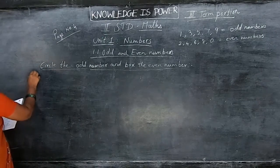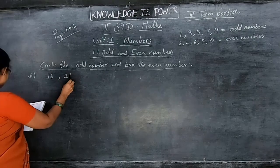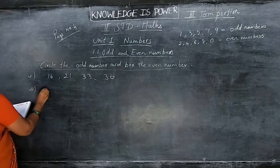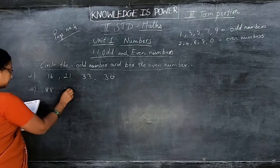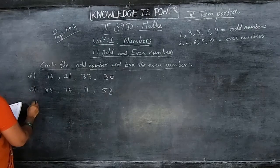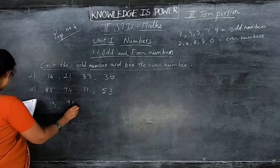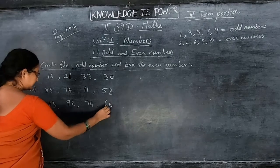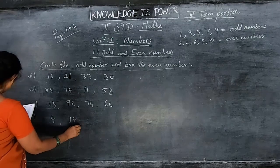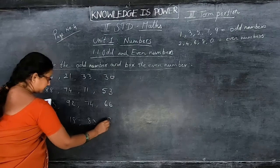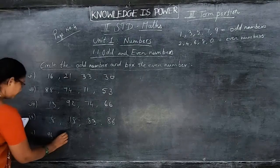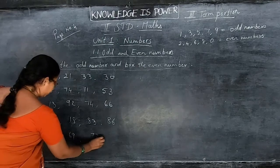See here. Question 6: 16, 21, 33, and 30. Question 7: 88, 74, 11, and 53. Question 8: 13, 92, 74, and 66. Question 9: 8, 18, 83, and 86. Question 10: 96, 69, 53, 72, and 27.